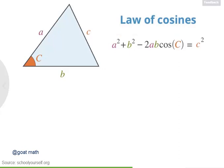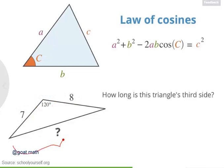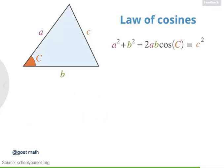Let's try the Law of Cosines out on a sample problem. Here's a triangle, and you know two of its side lengths, 7 and 8, and you know the angle between these sides measures 120 degrees. How long is this triangle's third side? If you get stuck, just click over here. Very well done. According to the Law of Cosines, this side has length 13. If you wanted to find the remaining two angles of this triangle, you could actually use the Law of Cosines again, or you could use the Law of Sines. And so together, the Law of Sines and the Law of Cosines are powerful tools that can help you figure out a triangle's remaining sides and angles when you only know a few of them.